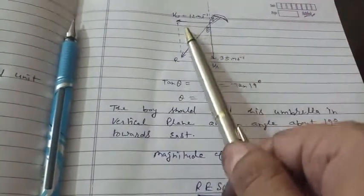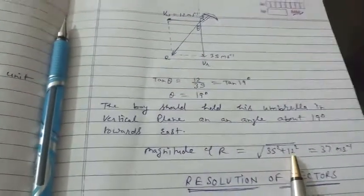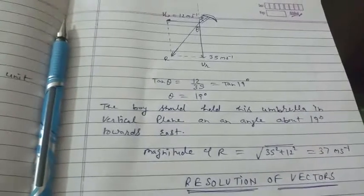In that case, R equals to root a square plus b square. The first vector square plus the second vector square. The answer is 37 meters per second.